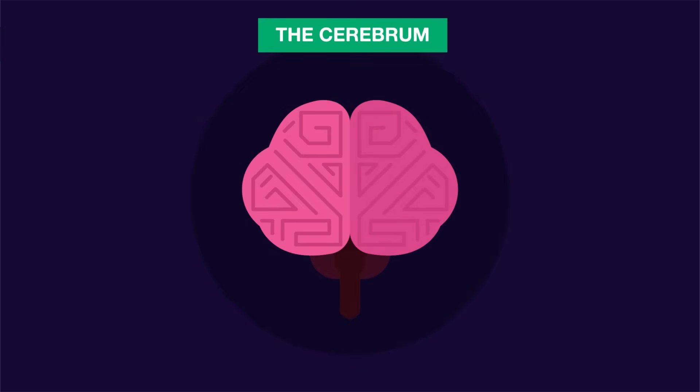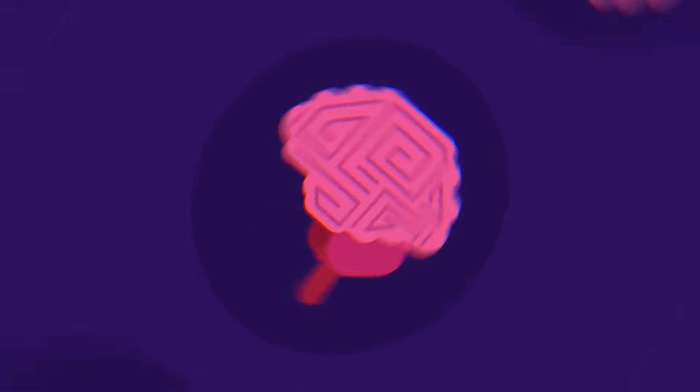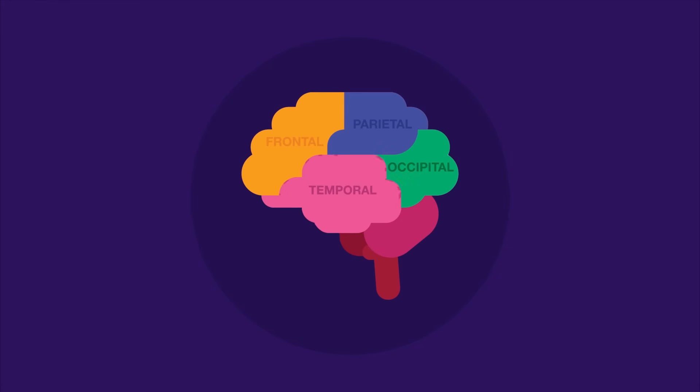Cerebrum is the largest part of brain, which can be further divided into right and left halves, called hemispheres. Each cerebral hemisphere has four lobes: frontal lobe, parietal lobe, occipital lobe, and temporal lobe.